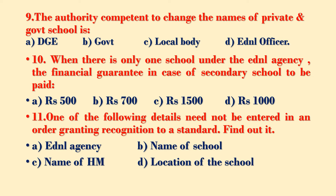The authority competent to change the names of private and government schools: Option A – DGE, Option B – Government, Option C – local body, Option D – educational officer. When there is only one school under the educational agency, the financial guarantee in the case of a secondary school to be paid: Option A – Rupees 500, Option B – Rupees 700, Option C – Rupees 1,500, Option D – Rupees 1,000.